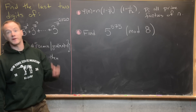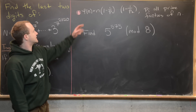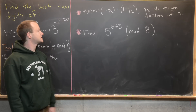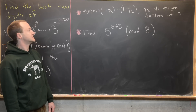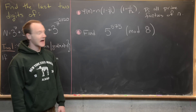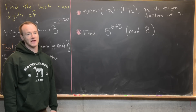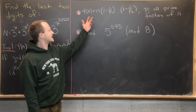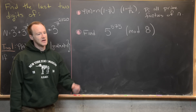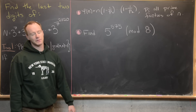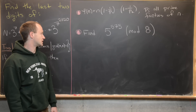There's also a nice closed formula for phi of n, which I also prove in the number theory playlist. Phi of n equals n times (1 minus 1 over p1) times (1 minus 1 over p2), all the way up to (1 minus 1 over pk), where the p_i's are all distinct prime factors of n. So you just need to know which primes divide n, not the full prime factorization.